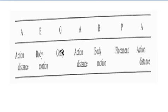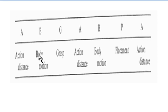In this slide you are going to see some variables of MOST: A, B, G, A, B, P, and A. These motions are generally broken into different categories — that is reach, move, turn, grasp, position, placement, etc. The significance of these variables is shown in this slide.